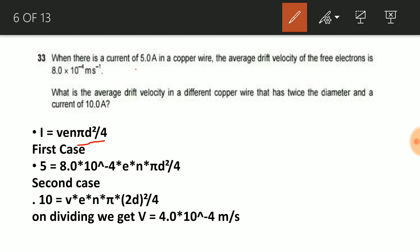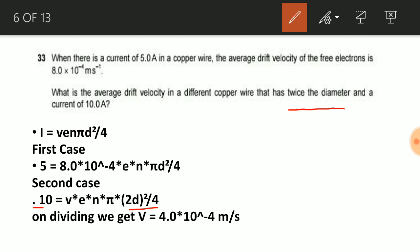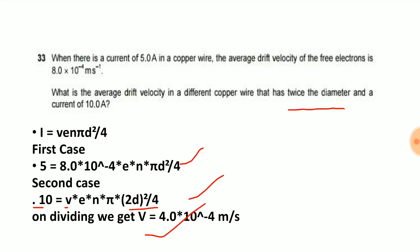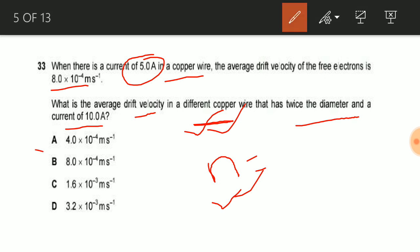In the first case, current is 5 amperes and drift velocity is 8.0 × 10⁻⁴ m/s, with area = πd²/4. In the second case, current is 10 amperes and diameter is twice. Dividing the first case by the second case, e and n cancel, and diameter terms also cancel. Solving this, we get the drift velocity as 4.0 × 10⁻⁴ m/s, which is option A. So option A is the correct answer for question number 33.